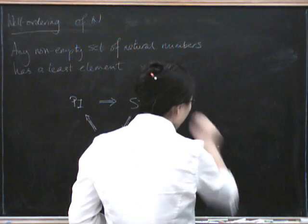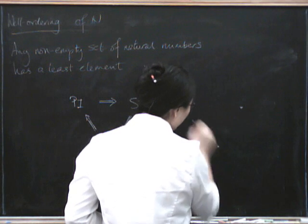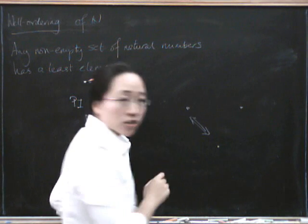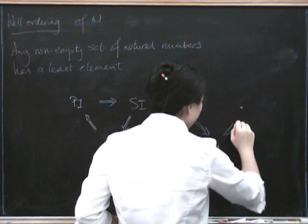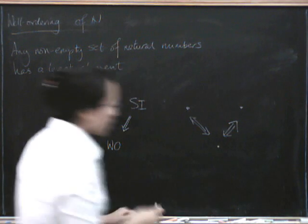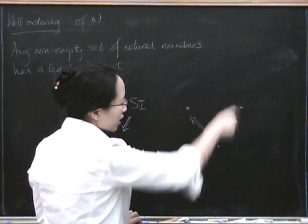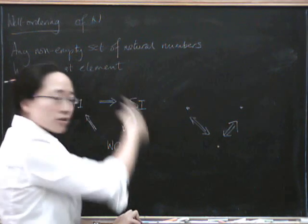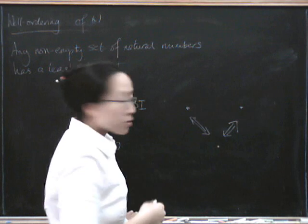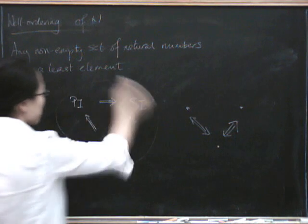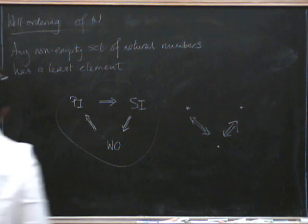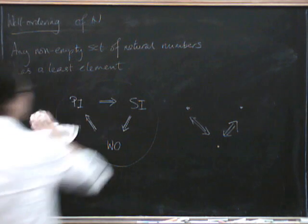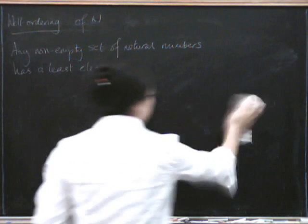Another way you can show that three things are equivalent is by showing that these are true if and only if each other, and that these are true if and only if each other. You can deduce by going around that these are true — that's a V-shaped way of doing it. We're going to do it the circle way. So let's start by showing that the well-ordering principle implies the principle of induction.